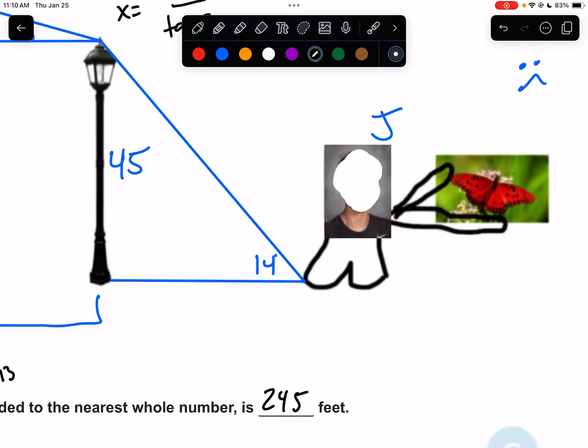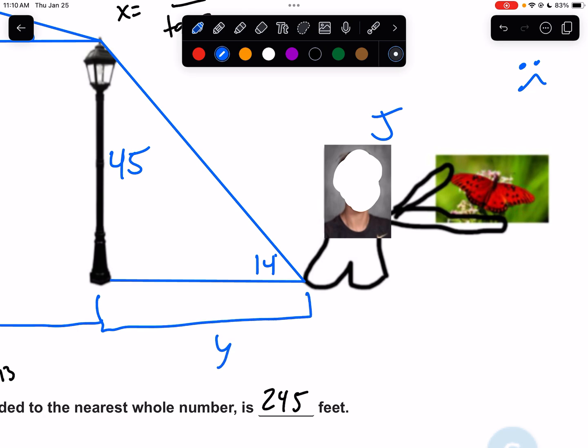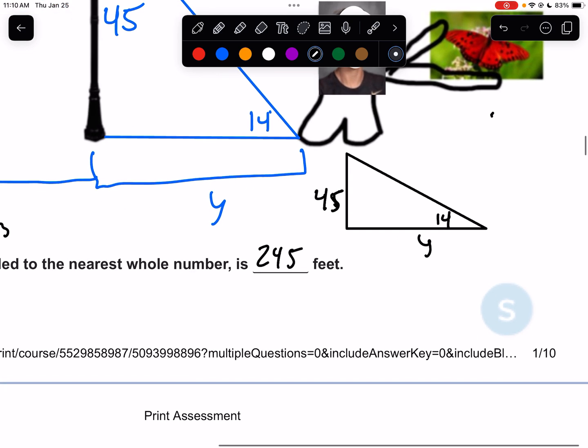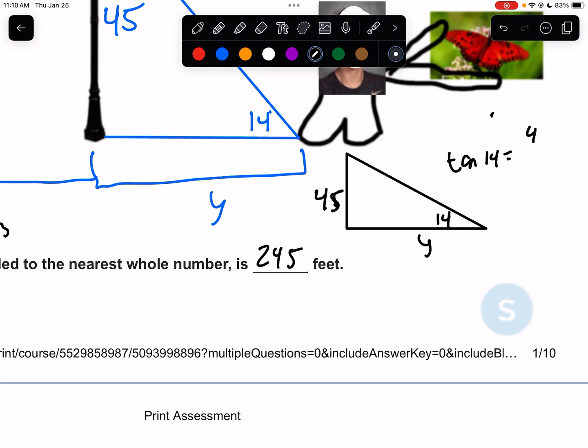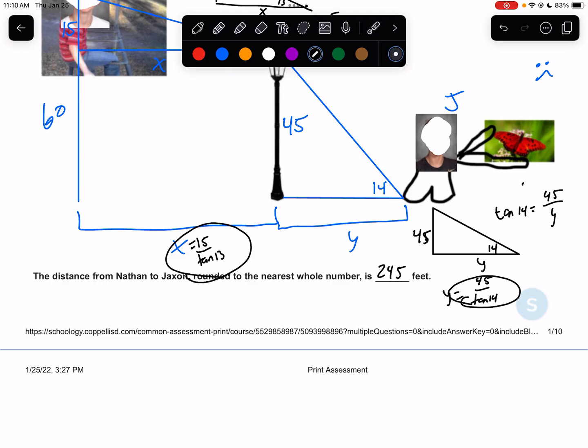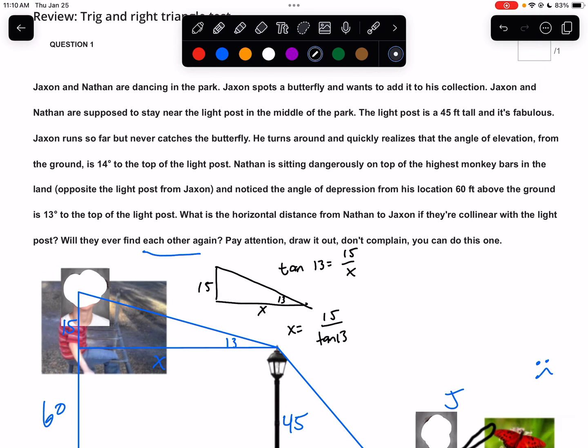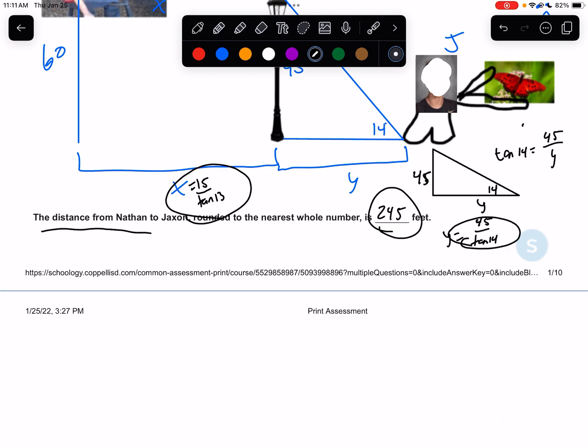And then we'll do the same idea here. We can get this distance, call it Y. I'm going to draw Jackson's right triangle over here. But what we have is a 45-foot light pole, a 14-degree angle of elevation, and we're looking for that side. So that would be the tangent of 14 equals opposite 45 over adjacent Y. So that distance is 45 divided by the tangent of 14. And what I'm going to do is add those two numbers together in my calculator. And when I do that, I get 245. It says, what is the horizontal distance? Pay attention. You can do this. Does it actually tell us how to round? It doesn't tell us how to round, does it? Oh, it says right here. The distance from Nathan to Jackson rounded to the nearest total number. Why did I do the nearest total number earlier? Yeah, it's going to be 245. Got it.